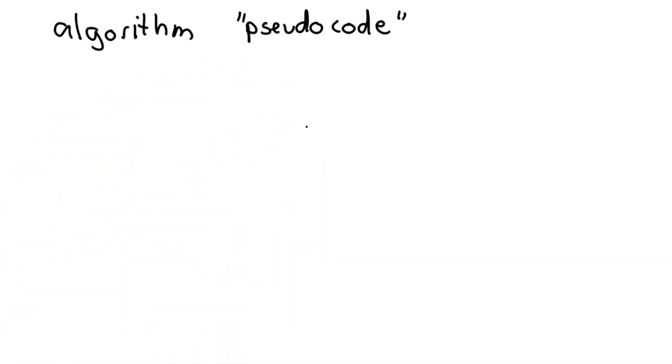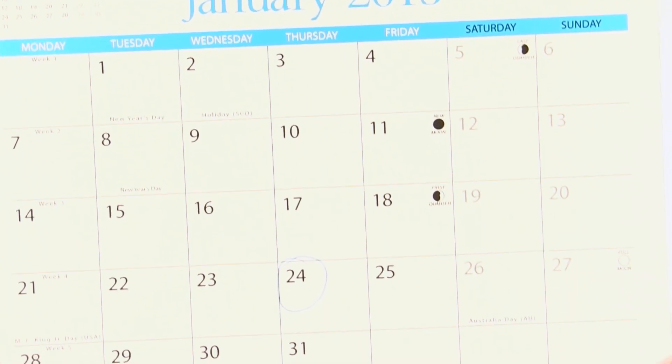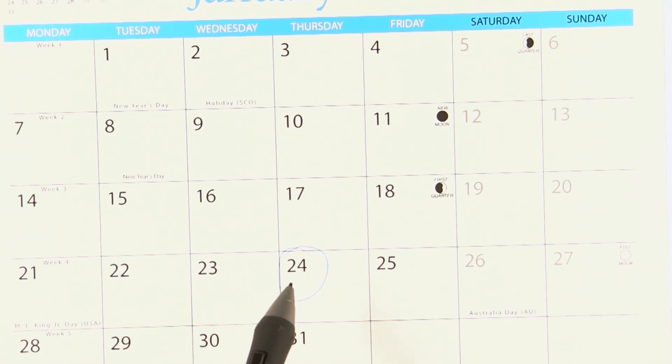So let's think about how we solved the problem as a human again. Here's how we started. We looked at our start date, which was January 24, and we counted the number of days remaining in January. We did that by just counting up.